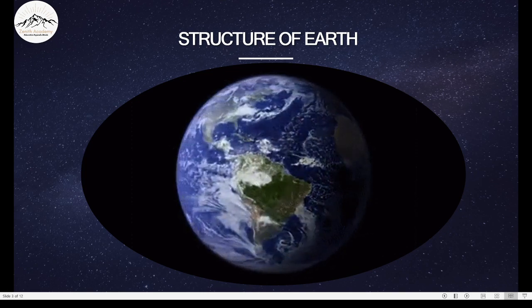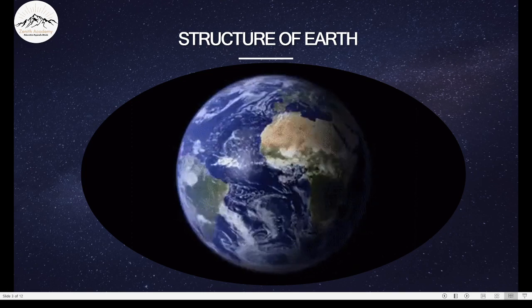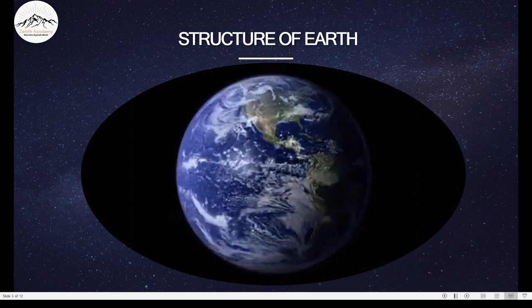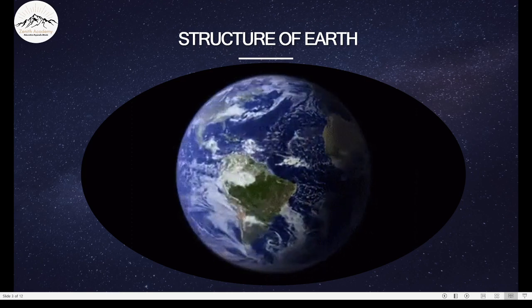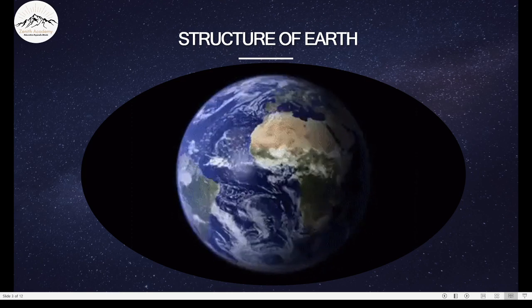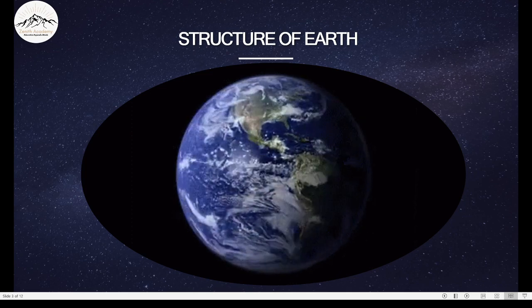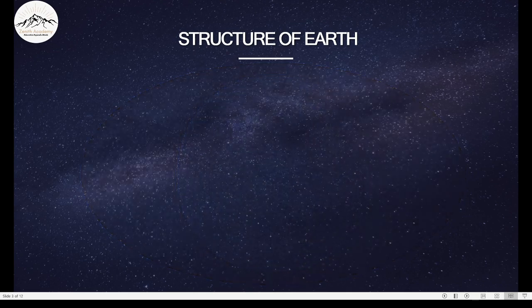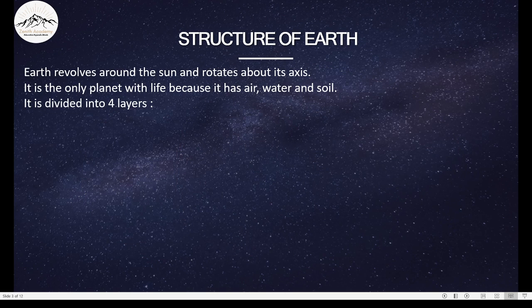And it rotates about itself in 24 hours. 24 hours sounds familiar, right? These 24 hours make up a day. And the revolution around the sun, that is 365 days and 6 hours, makes up one year. So every time you are growing a year older, you know that you have just completed another circle around the sun. Interesting, right?